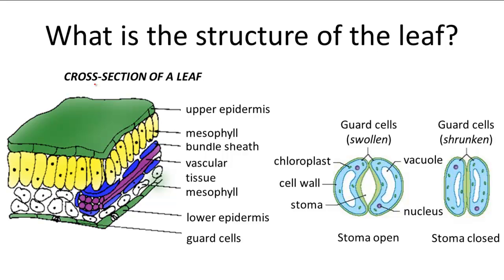The leaf is the primary photosynthetic organ of the plant, and it consists from top to bottom of the upper epidermis, palisade mesophyll, the bundle sheath cells, vascular tissue, the spongy mesophyll, lower epidermis, and the guard cells.